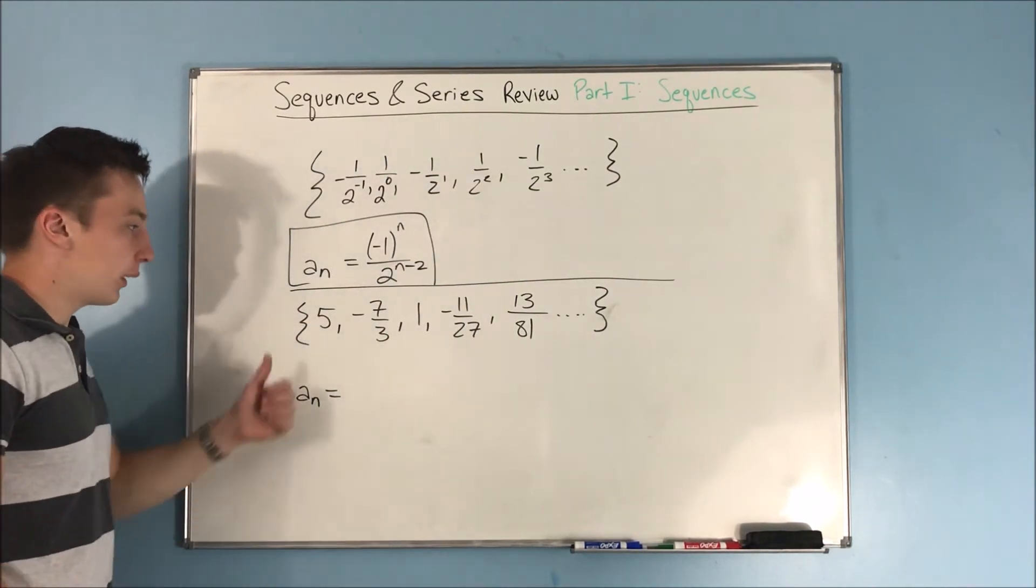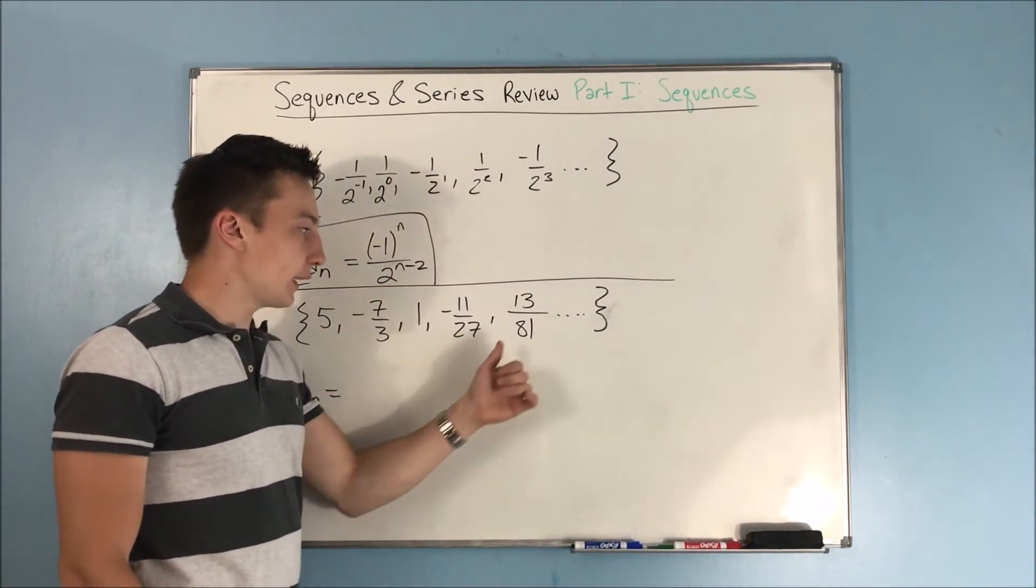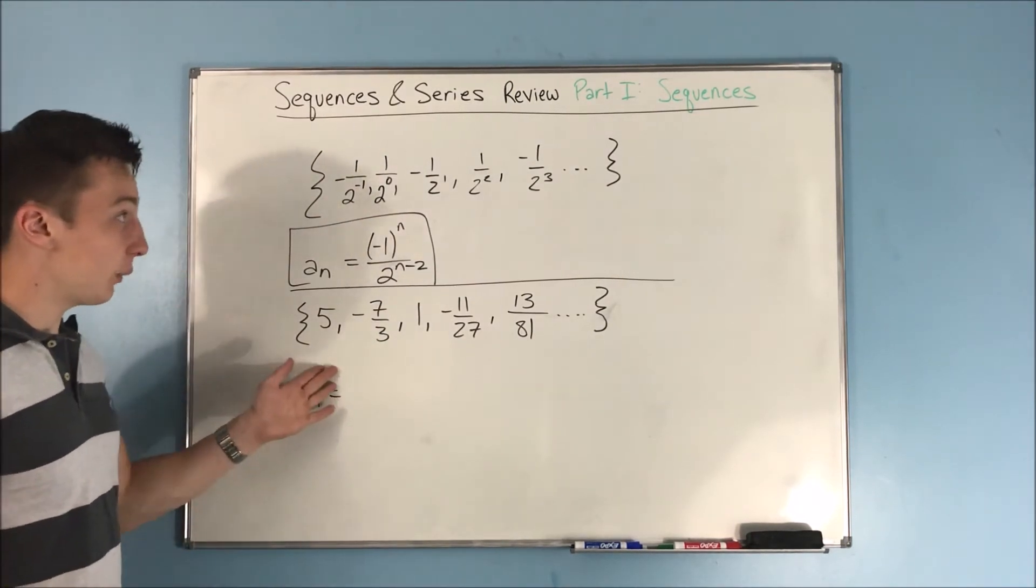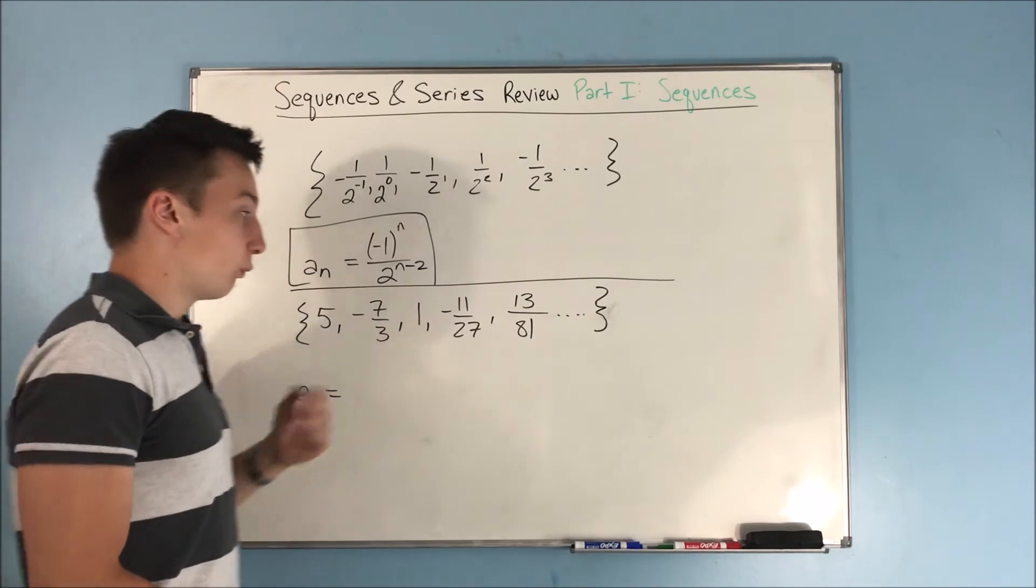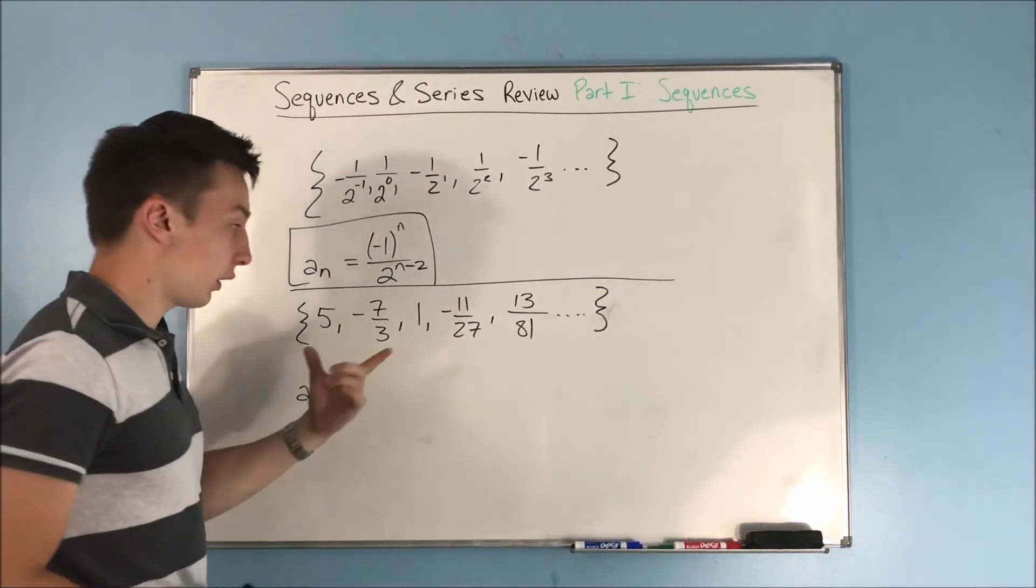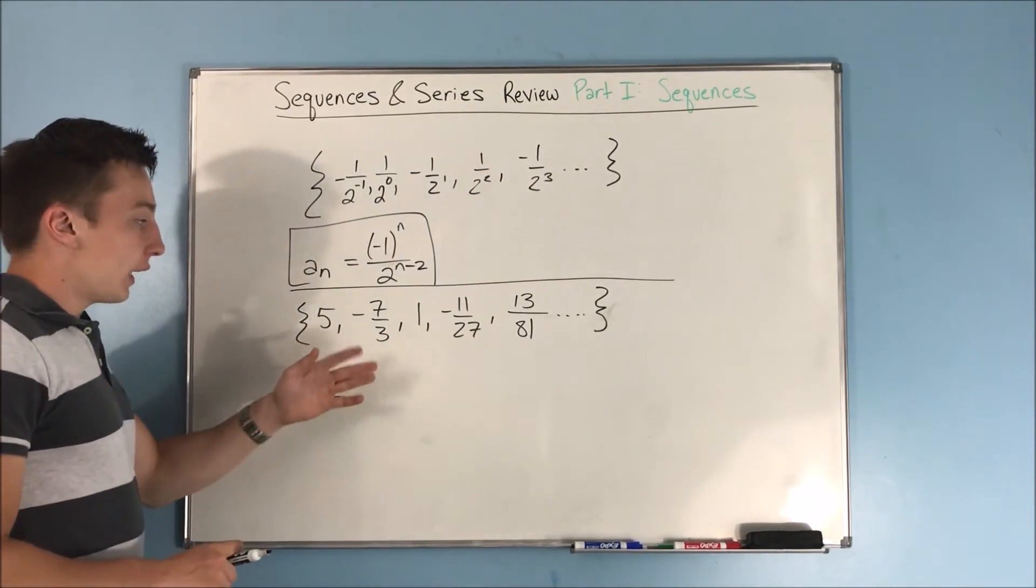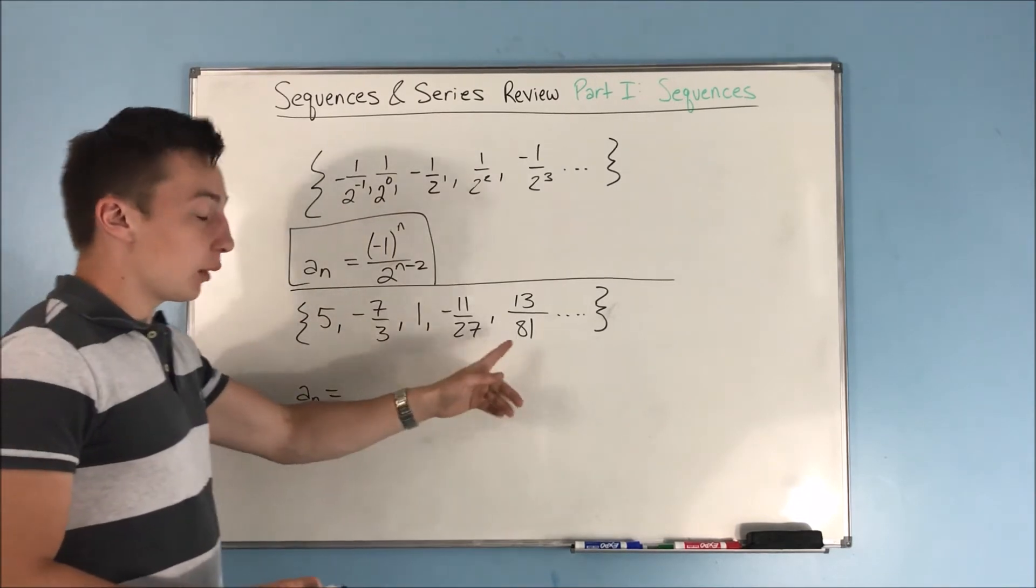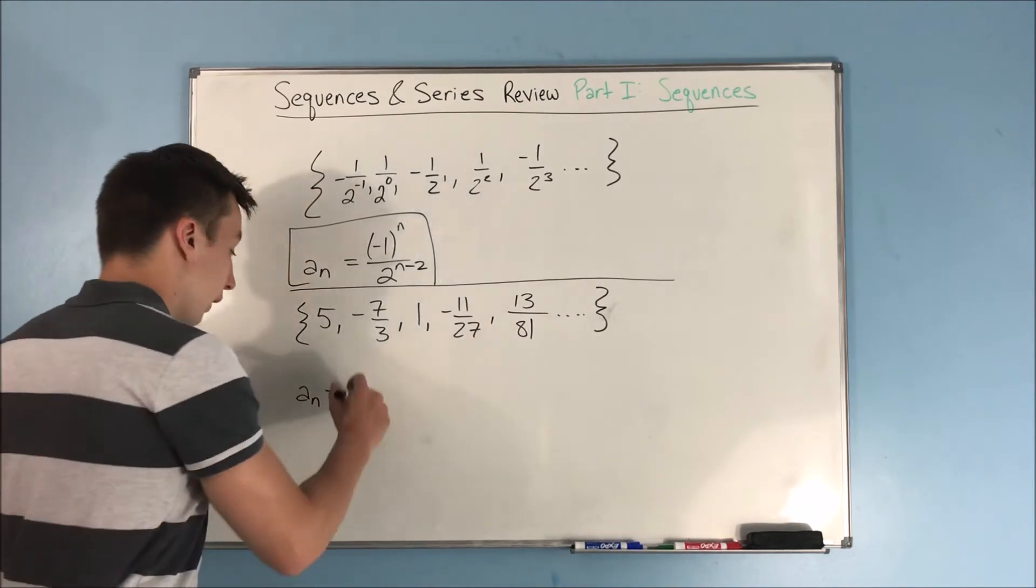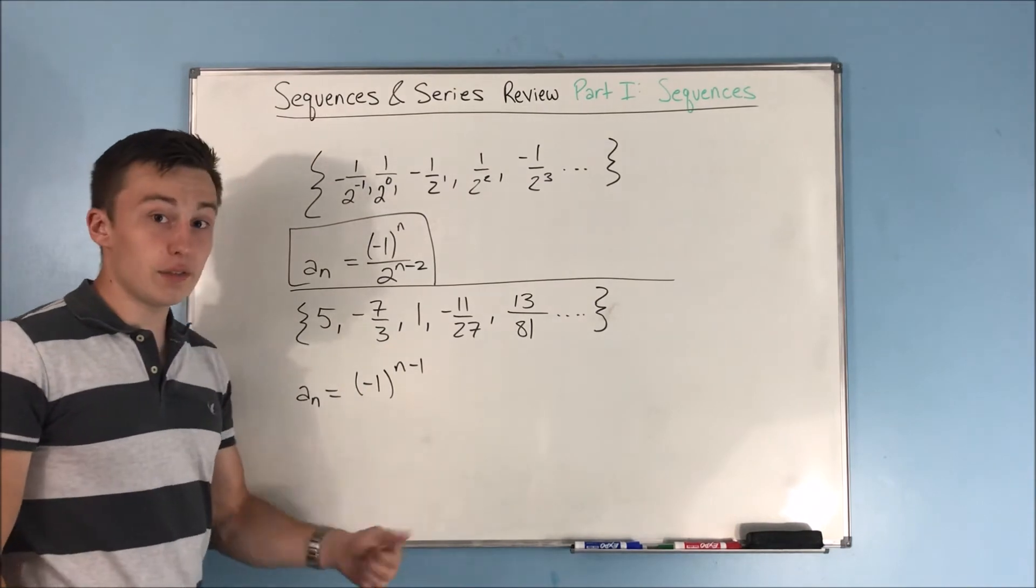Let's look at our next sequence here. We have 5, -7/3, 1, -11/27, and 13/81. This one may be a little less obvious to kind of see what's going on right away. So we're going to take this step by step. Let's start off with the negatives. That's a good place to start when you're looking at trying to make a formula for a sequence. Well, we see that every even term is negative, and every odd term is positive. So we're going to start off with a -1 to the n minus 1. That makes all even terms negative.